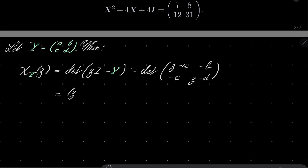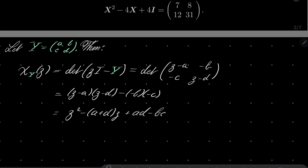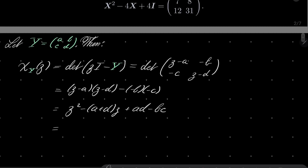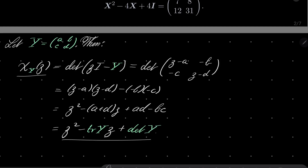That equals (Z minus a)(Z minus d) minus (minus b)(minus c), which is Z squared minus (a plus d) times Z plus (ad minus bc). If you look closely, a plus d is the trace of matrix Y, and ad minus bc is the determinant of matrix Y. So I have justified this simple formula for the characteristic polynomial.